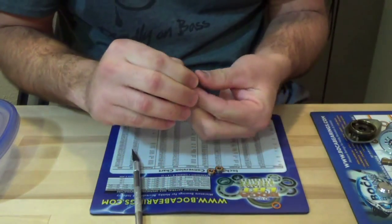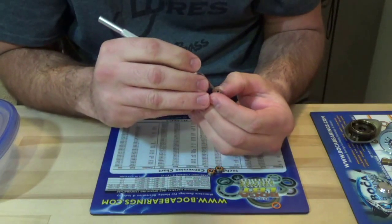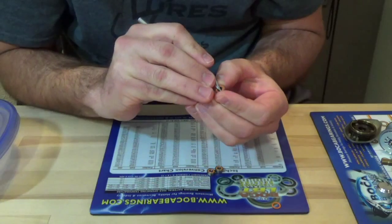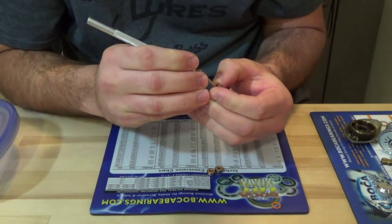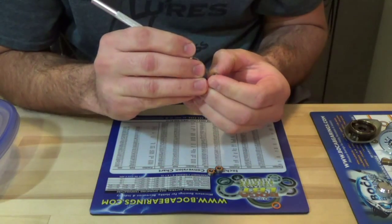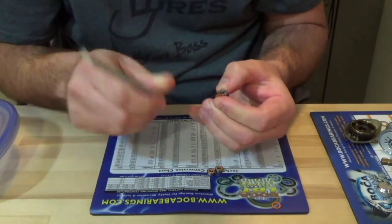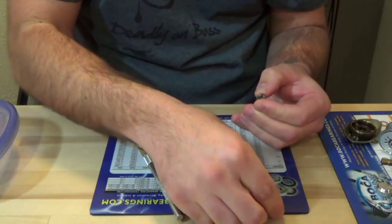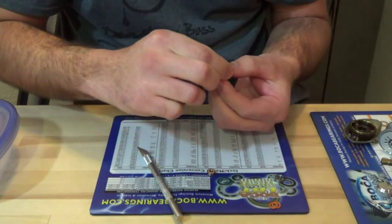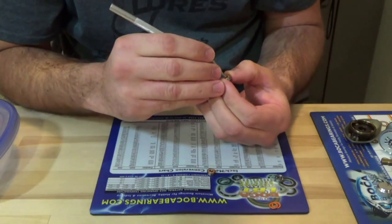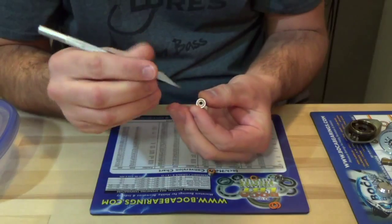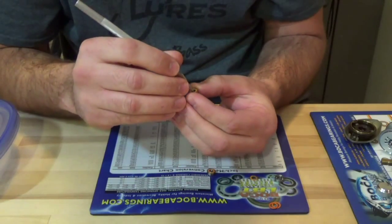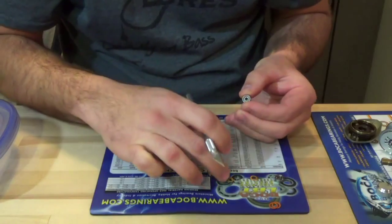There's a seal. Do the other side. Okay, there's one. There's two.